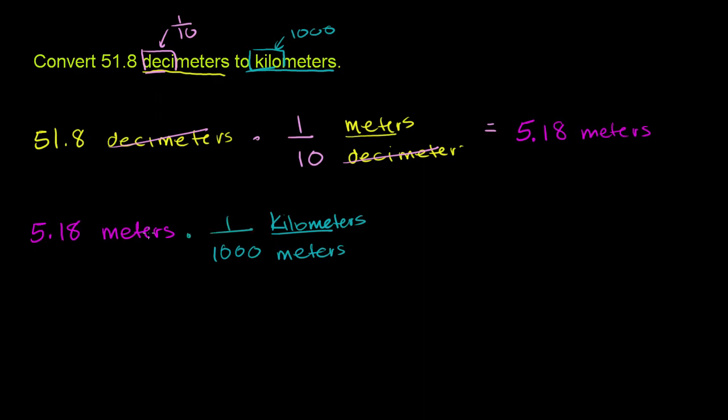So if we were to multiply this, the meters cancel out. We'll just be left with kilometers. And multiplying something by 1 over 1,000 is the exact same thing as dividing by 1,000. And that makes sense. We should get a smaller number here, because we're going from a smaller unit to a larger unit. So we're going to need a much smaller amount of the larger unit. So this is going to be equal to 5.18 over 1,000 kilometers.